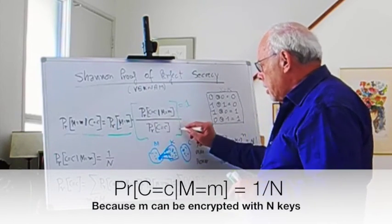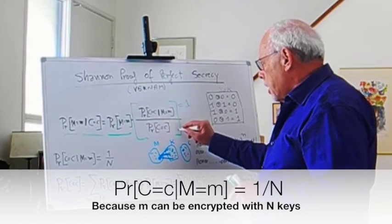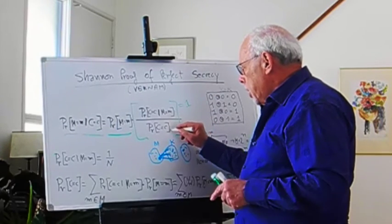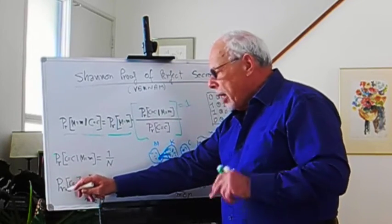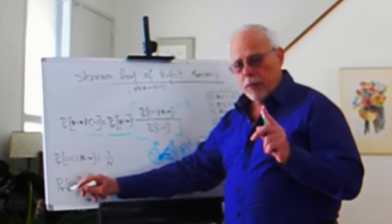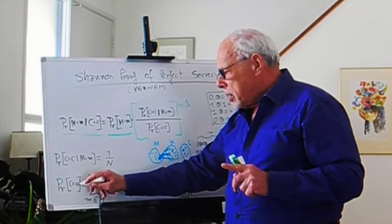Good. Now let's see what we have here. This says that we need to find the expression for the unconditional probability for the ciphertext to be c.